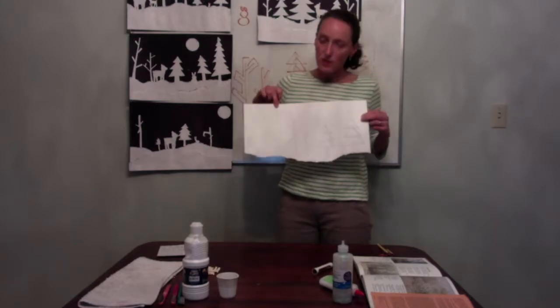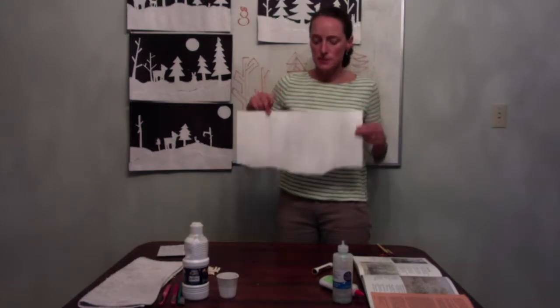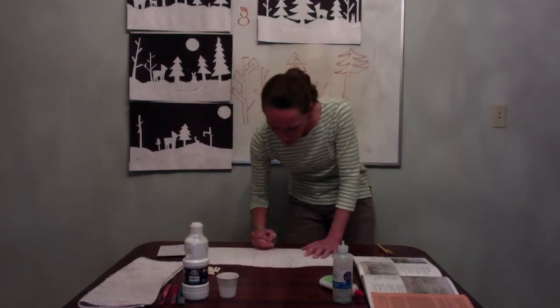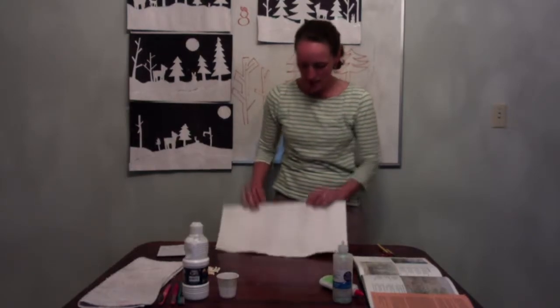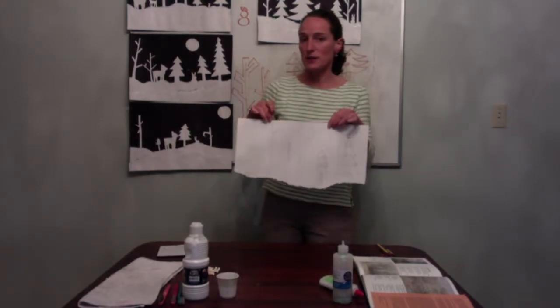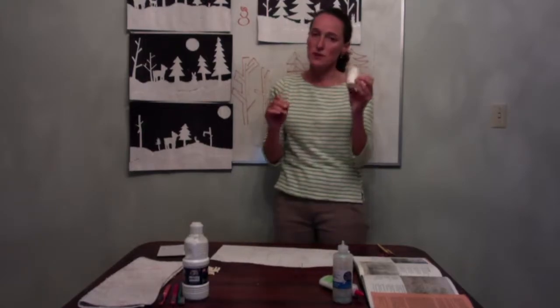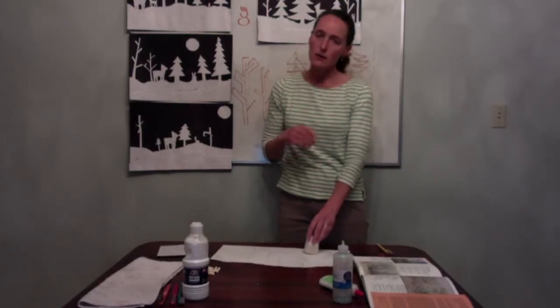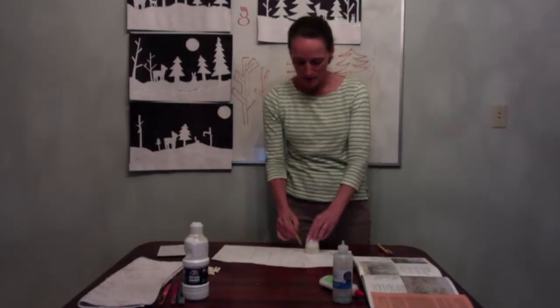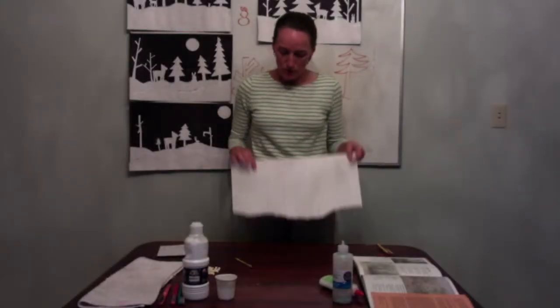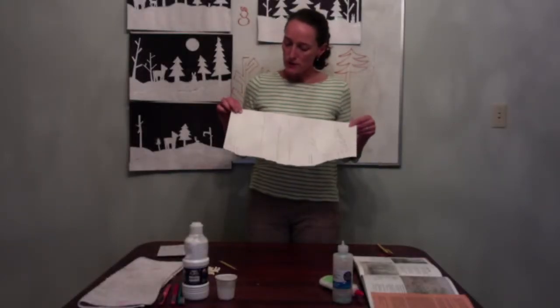Now for all the shapes except the moon — the moon is a simple circle. You can freehand it since you're cutting it out anyway and can tweak it, or if kids want to trace it, there are all kinds of circular objects around them in the classroom.